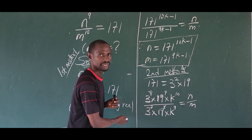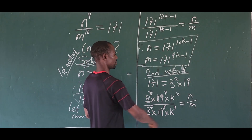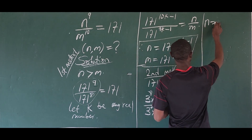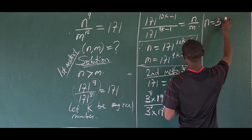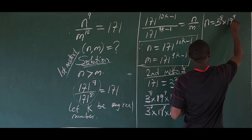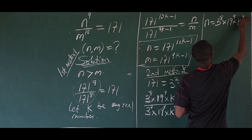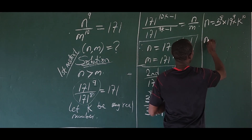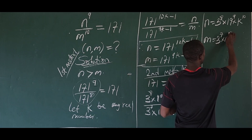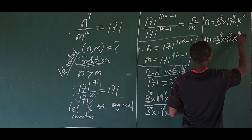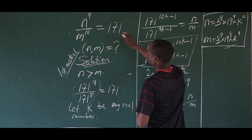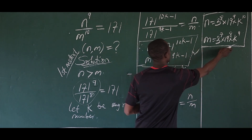So looking at this critically, our N equals 3 to the power of 8, times 19 to the power of 9, times K to the power of 10. And our M equals 3 to the power of 7, times 19 to the power of 8, times K to the power of 9. This is a general solution for Method 2. This is one solution, and the first is another.